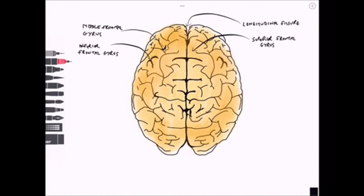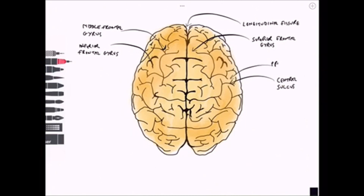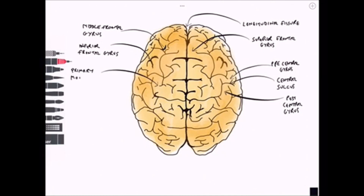Moving more posteriorly in this superior view, we can label some structures that are really important for motor control and sensory control. Here we have the central sulcus, which separates the frontal lobe from the parietal lobe. We have the precentral gyrus anterior to that, and the postcentral gyrus — also known as the primary motor cortex and the primary sensory cortex respectively.